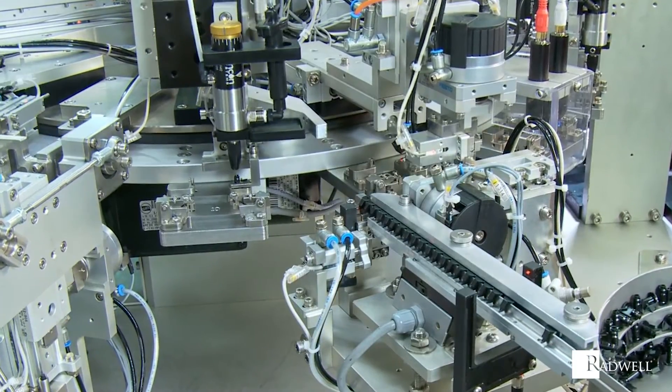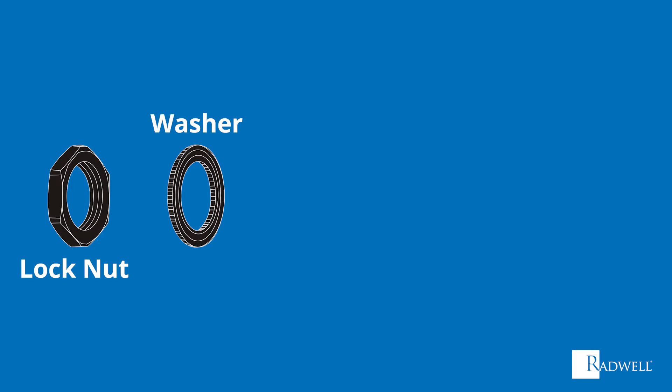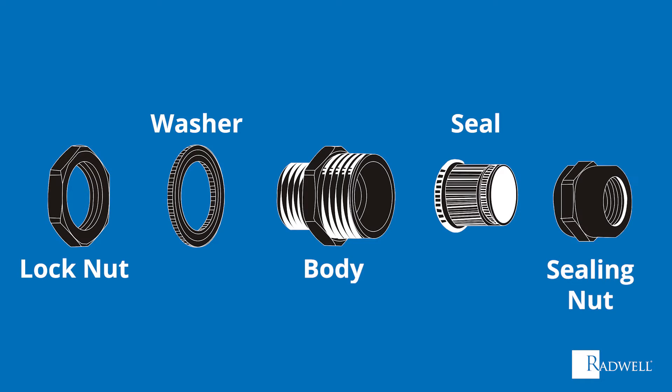The main components of a cable gland are a lock nut, washer, body, seal, and sealing nut.